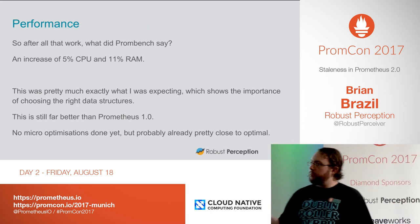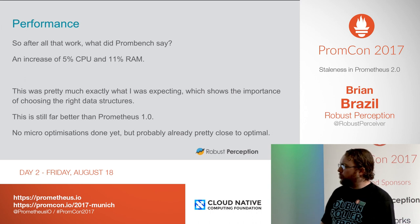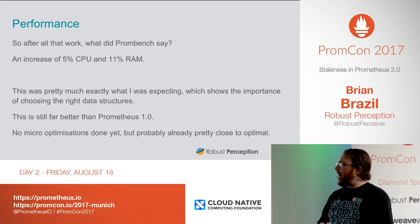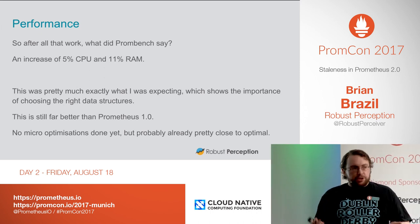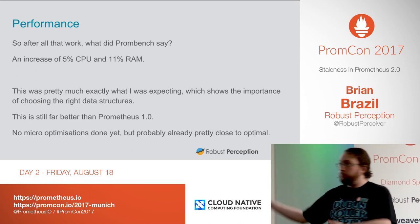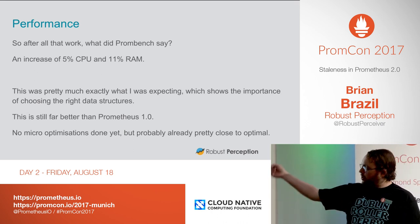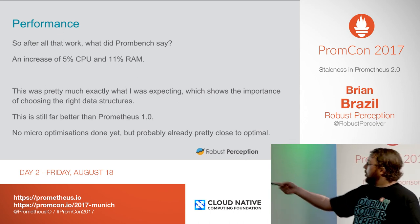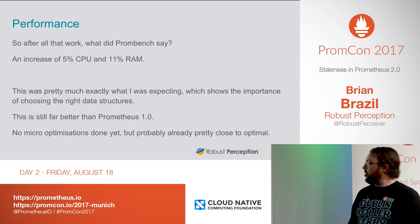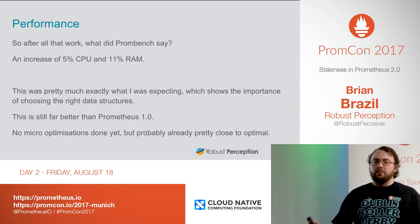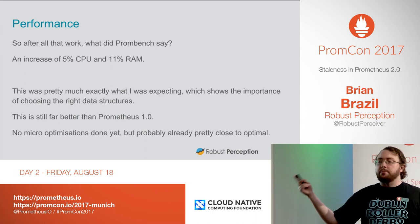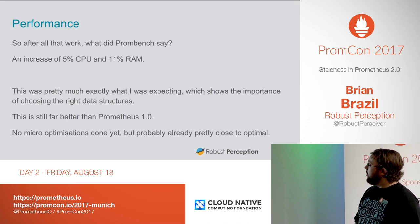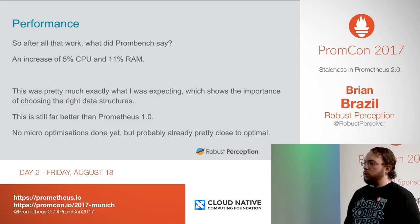After choosing those data structures, PromBench said it uses about 5% more CPU and 11% more RAM. These are basically the numbers I expected — I expected about 10% RAM and my gut said about 5% CPU. But this is still, with all the other improvements, far better than Prometheus 1.0. I haven't done micro-optimizations yet, but it's probably pretty close to optimal already. This does show how important it is to choose the right data structures — all of that improvement came from just that.